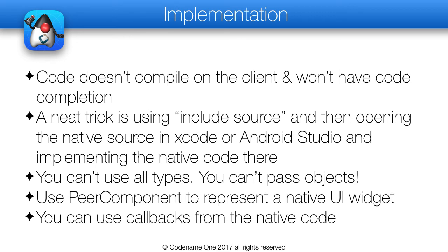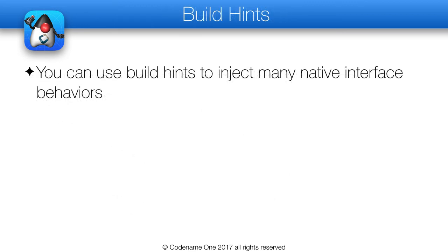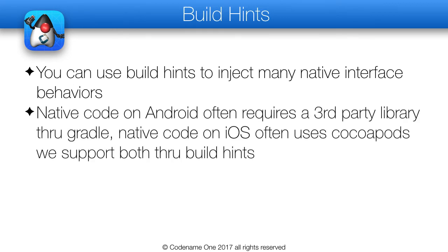Native code can do callbacks into Codename 1 code. It is a bit challenging though, so I suggest reading about it in the developer guide where we go into more details. One of the biggest difficulties when dealing with native code is in the configuration and not in the code. Build hints allow us to support all types of configuration. Native library integration instructions often start with Gradle dependency instructions for Android or a CocoaPod instruction for iOS — both of these are supported through build hints, and you can integrate a native library by defining the right hints.